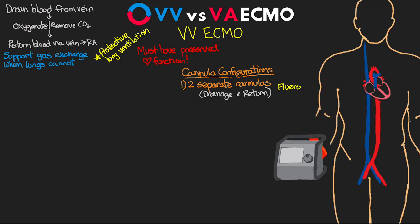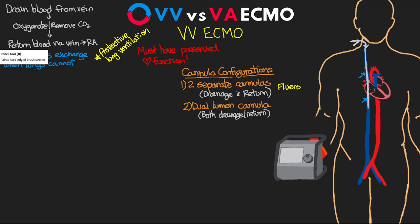The other main cannulation option is a dual lumen cannula — a single insertion in the right IJ vein. This large cannula has both the drainage and return lumens in one, and reduces bleeding risk. It's inserted down the superior vena cava and sits across the right atrium in both the inferior and superior vena cava, with multiple drainage ports in both vessels and the return port directed toward the tricuspid valve, essentially returning blood into the right ventricle. Because of its position-dependence, we need fluoroscopy for placement as well as echo to ensure proper direction of flow.